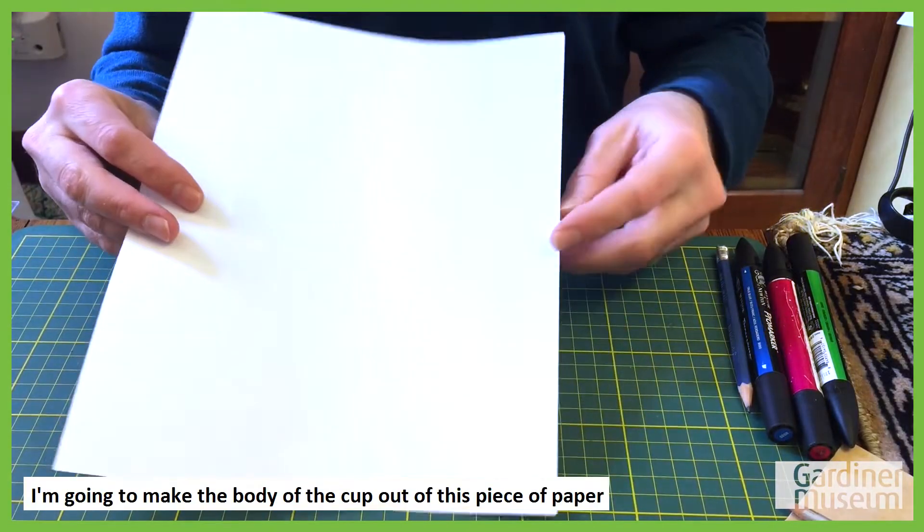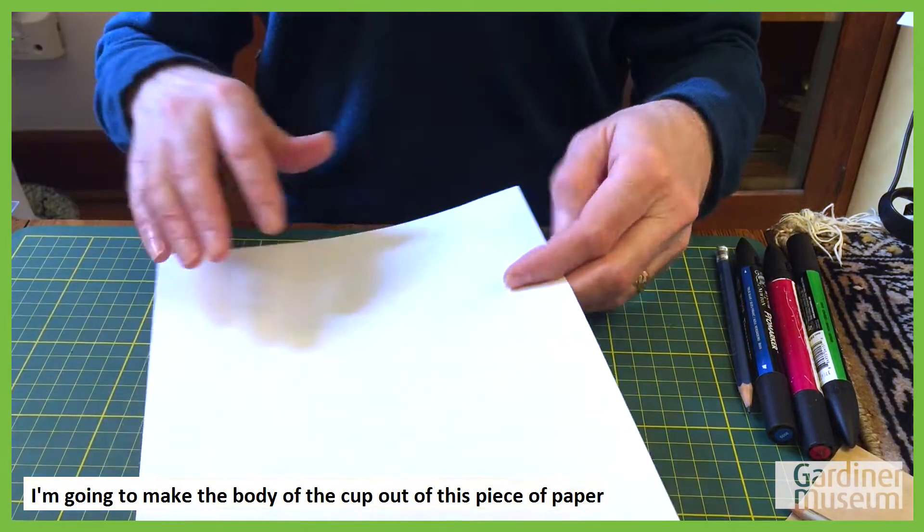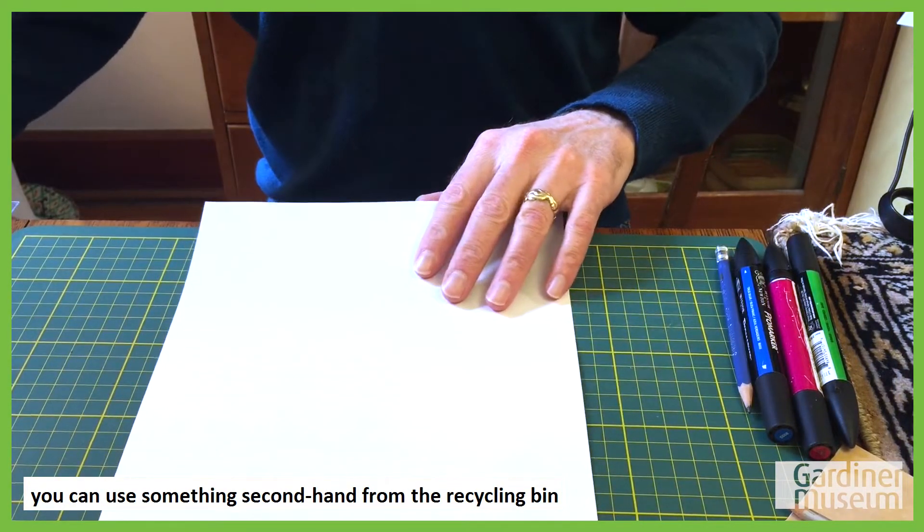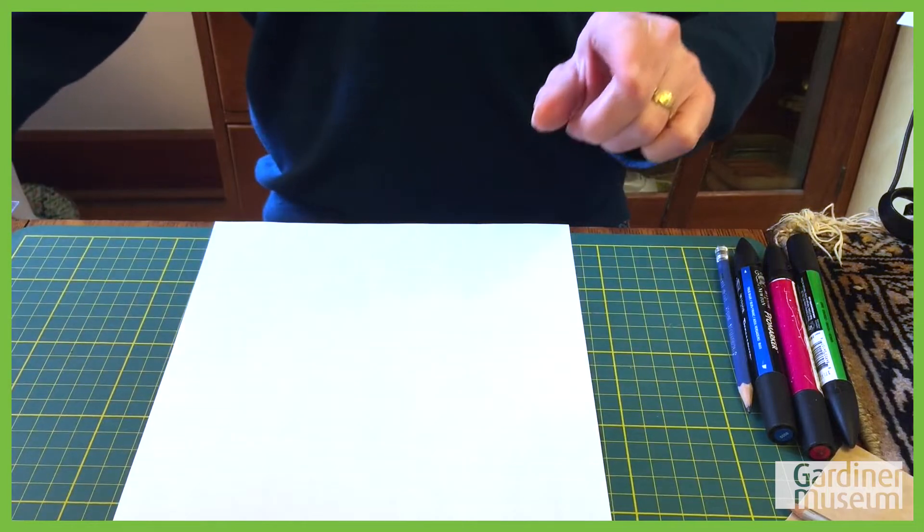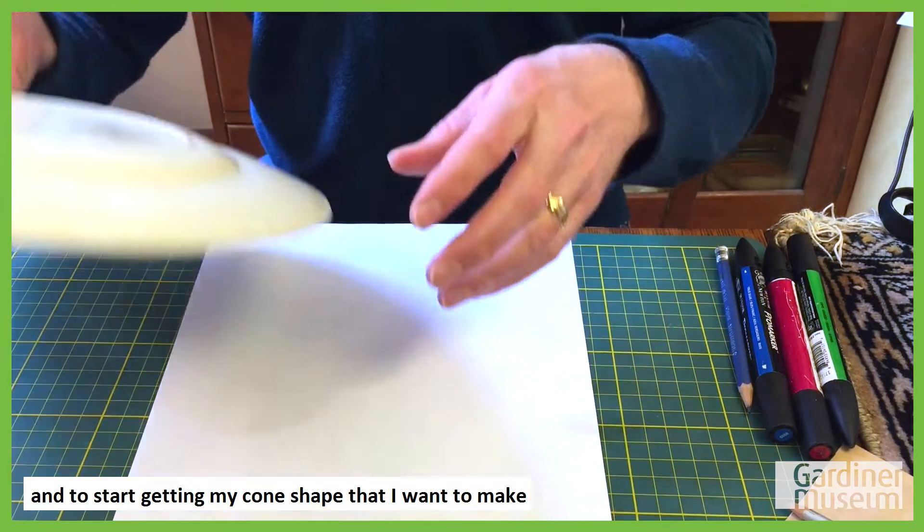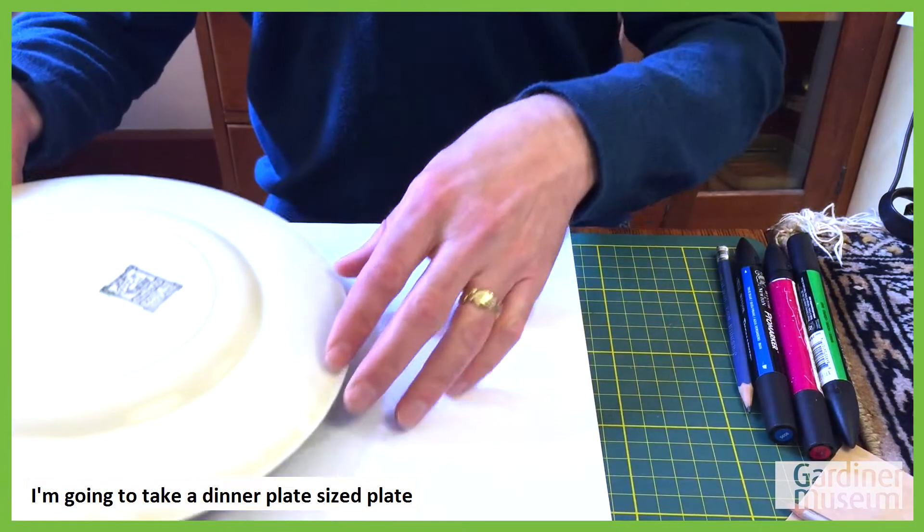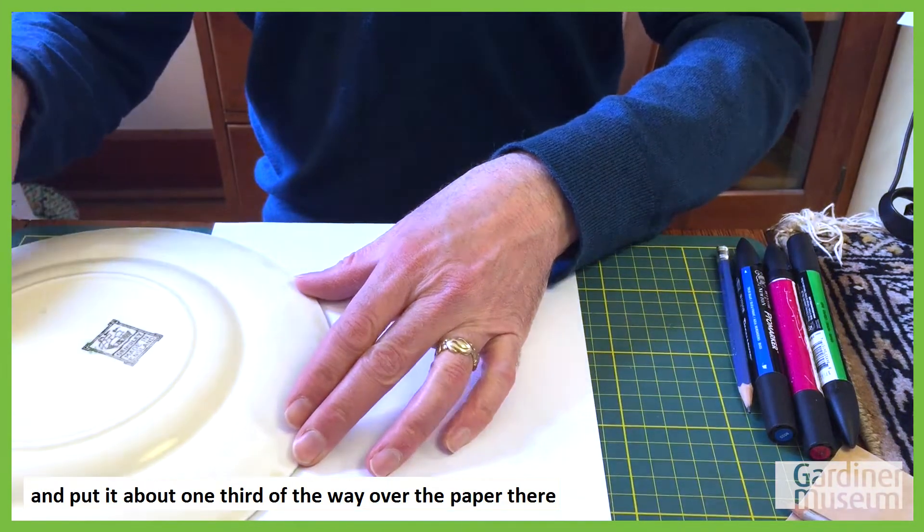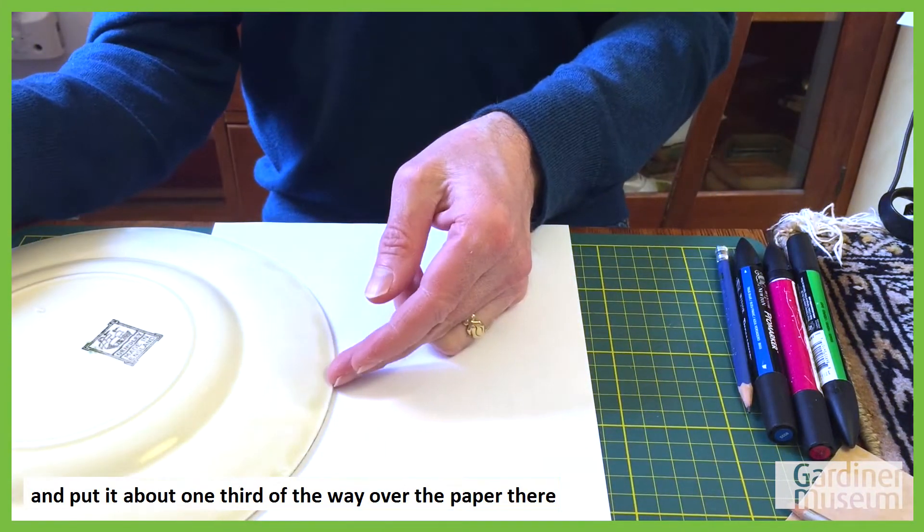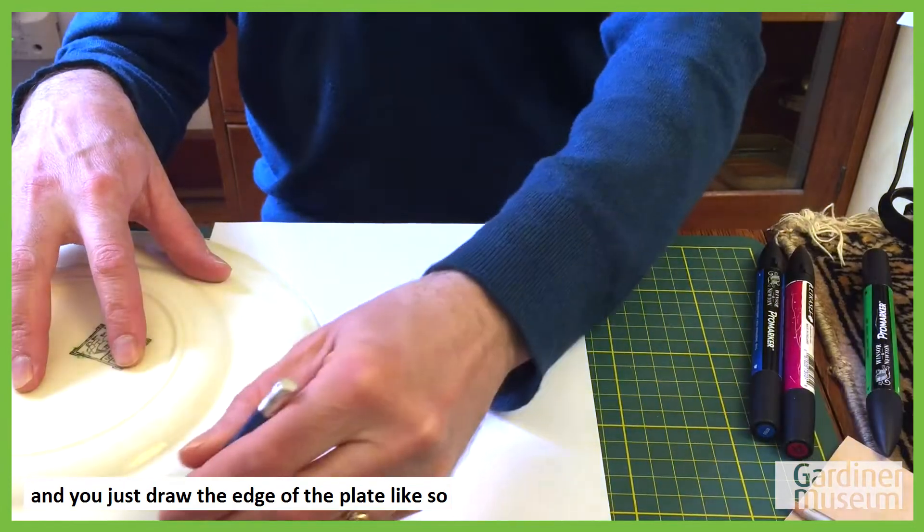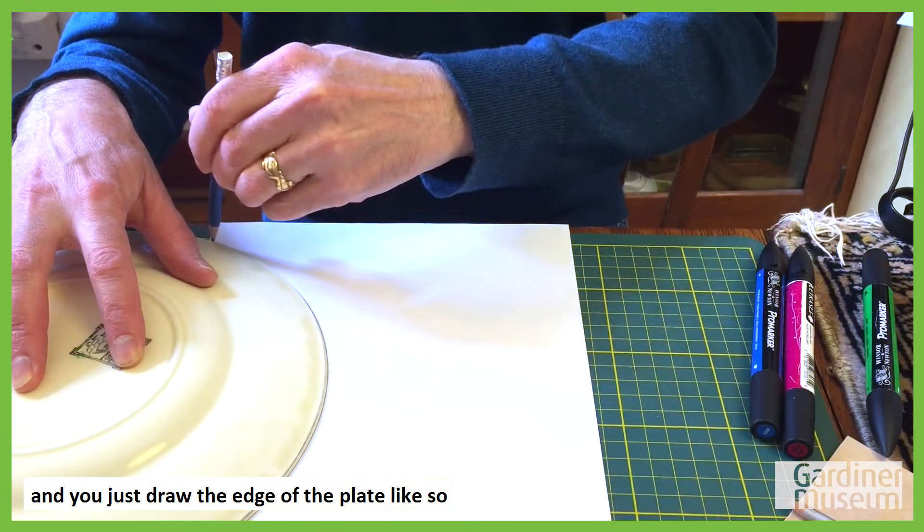I'm going to make the body of the cup out of this piece of paper. You could use something secondhand from the recycling bin, but I've got a fresh one here. To start getting my cone shape that I want to make, I'm going to take a dinner plate size plate and put it about one-third of the way over the paper there, and just draw the edge of the plate like so.